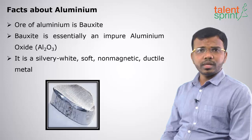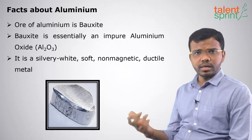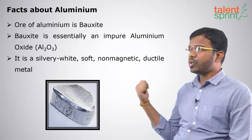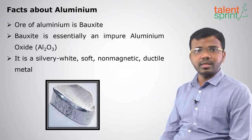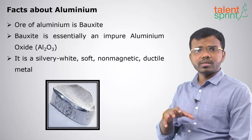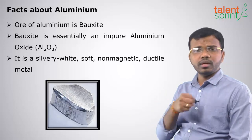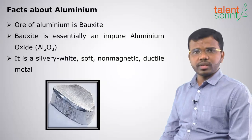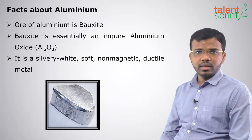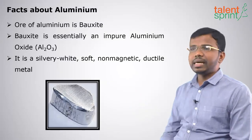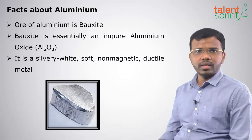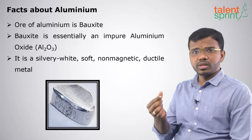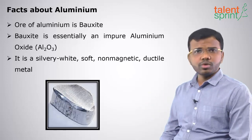Aluminium — the ore of Aluminium is called Bauxite. Bauxite is an impure Aluminium oxide, that is Al2O3. From Bauxite, we extract Aluminium, and it is a silvery white, soft, non-magnetic and ductile element. It can be drawn into wires as well as sheets.